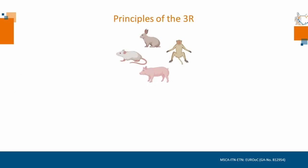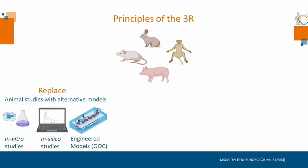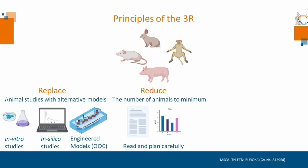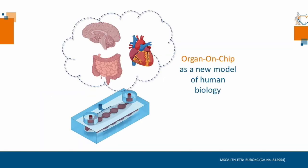The 3R principle aims to replace, reduce and refine animal models. This includes engineered laboratory models mimicking how the human body works, better experimental design and adequate statistical planning, and better protection for laboratory animals during experiments and housing. This is where our new systems come into play.